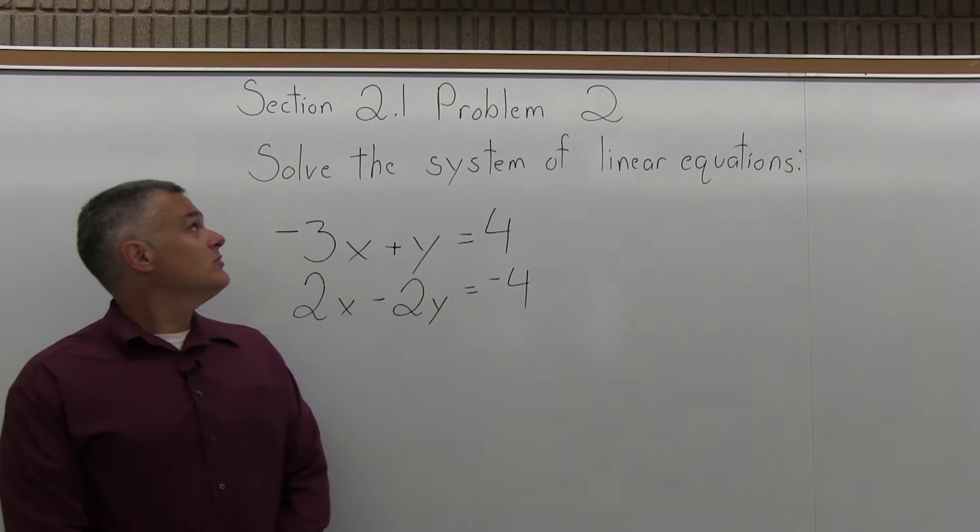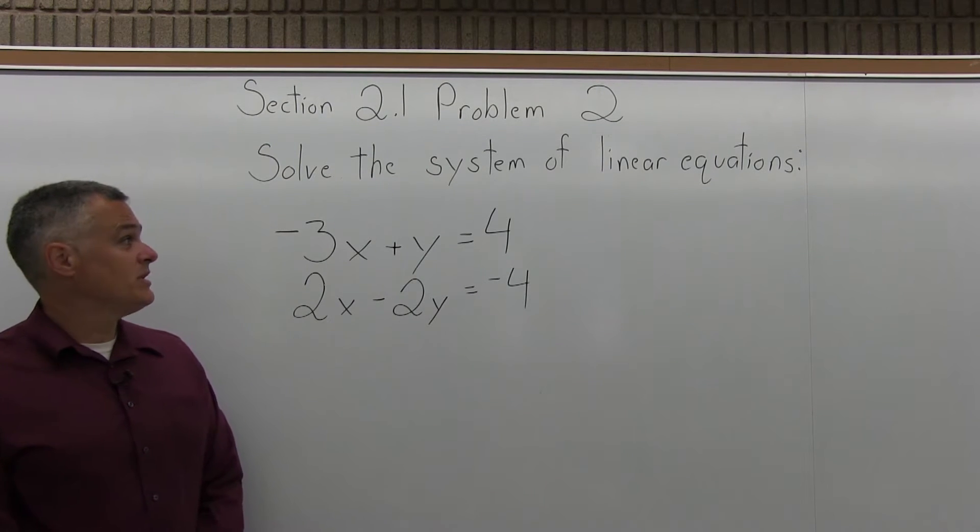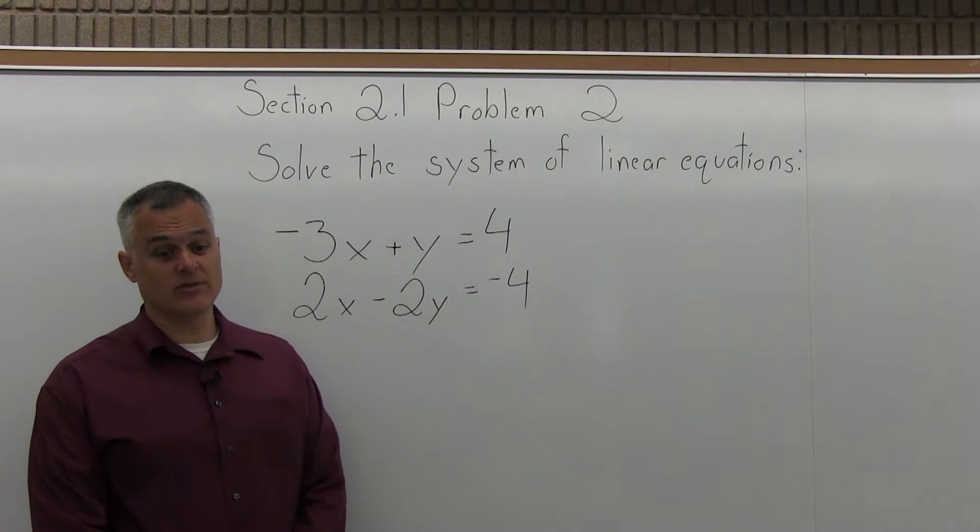This is Problem 2 from Section 2.1. Solve the system of linear equations: negative 3x plus y equals 4, and 2x minus 2y equals negative 4.